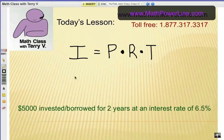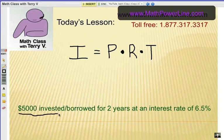The formula is I equals PRT. I is interest and the interest that you earn or if you are borrowing the money, the interest that you pay equals the principal. The principal is the amount that you are going to invest or borrow.